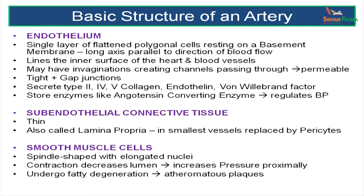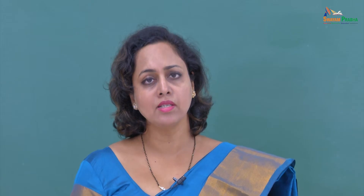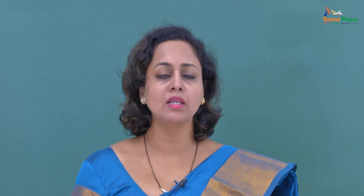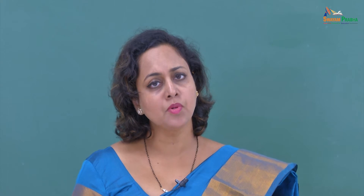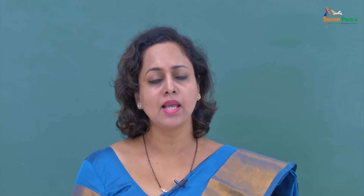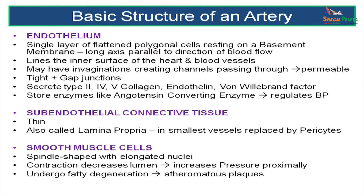The endothelium is made up of a single layer of flattened polygonal cells aligned along the axis of the artery. These cells form a barrier between the blood in the lumen and the wall of the artery. Besides protection, they have other functions like storage of angiotensin converting enzyme as well as secretion of type 2, 4, 5 collagen, endothelin and von Willebrand factor.